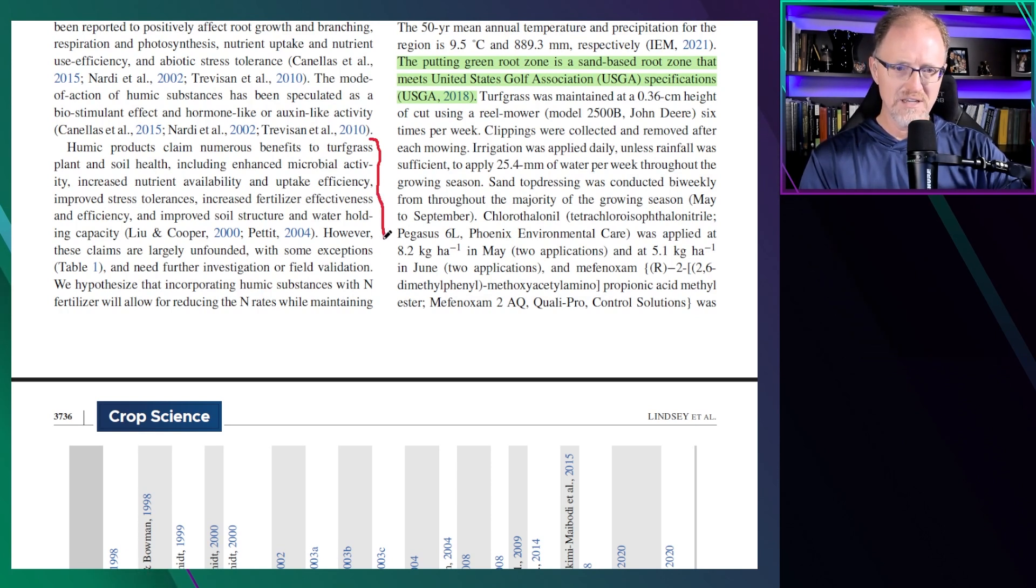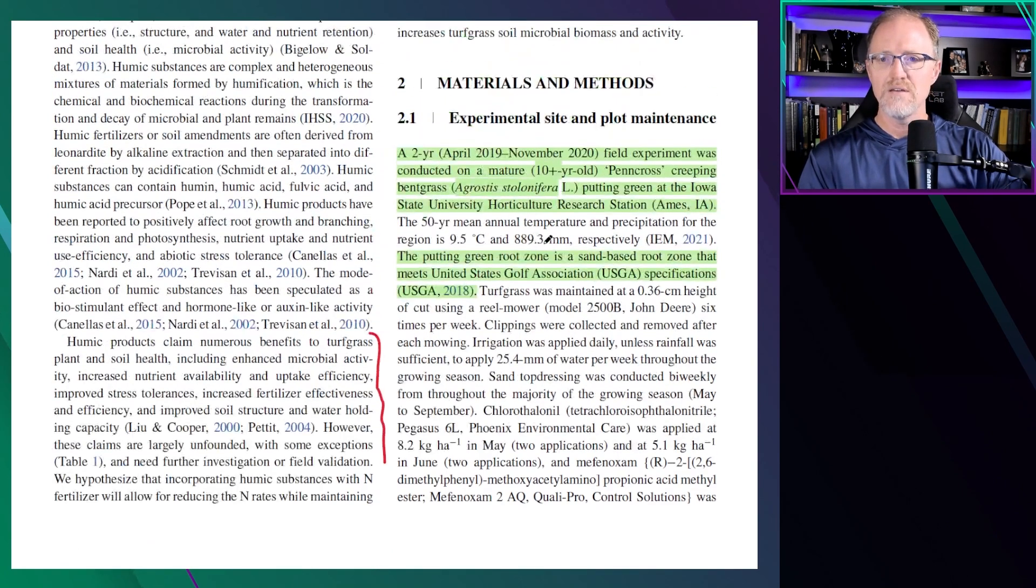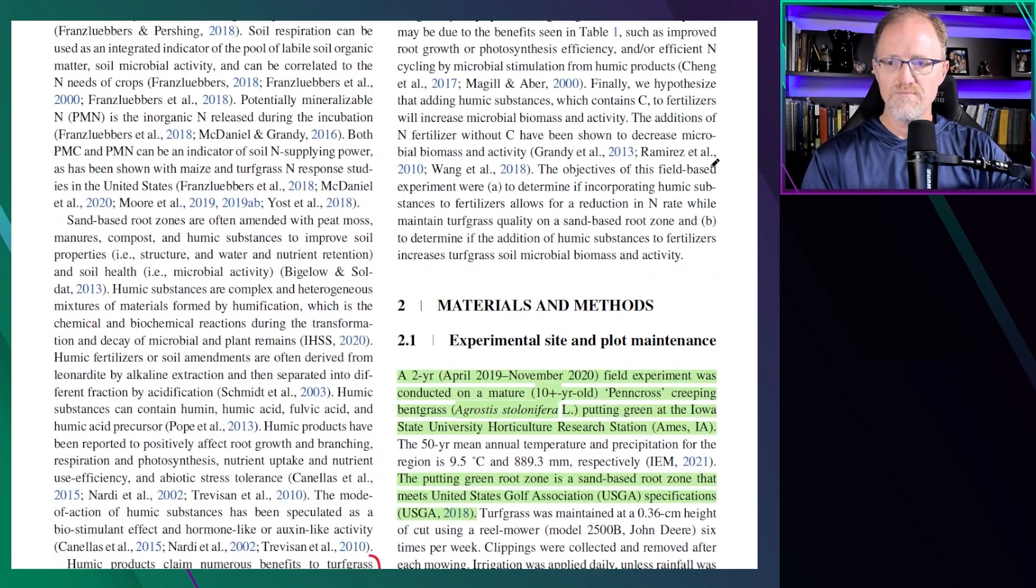They say, however, these claims are largely unfounded and need further investigation. The objective of this field-based study was to determine if incorporating humic substances to fertilizers allow for a reduction of nitrogen rate while maintaining turfgrass quality on a sand-based putting green and to determine if the addition of humic substances to fertilizers increase turfgrass microbial biomass and activity.